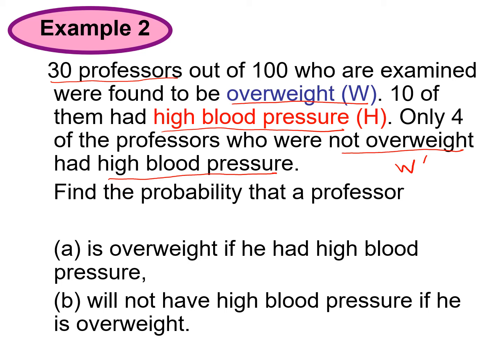Find the probability that a professor: A) is overweight if he had high blood pressure — this is a conditional event — and B) will not have high blood pressure given that he is overweight.